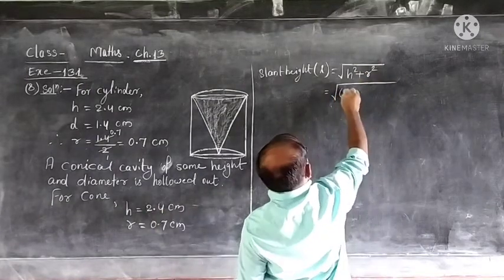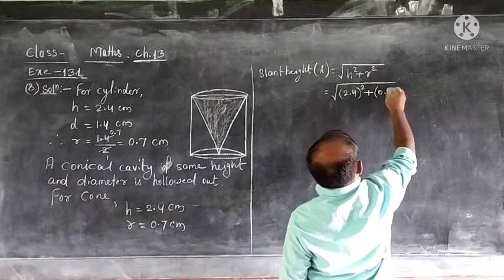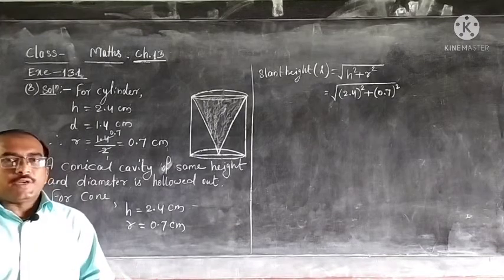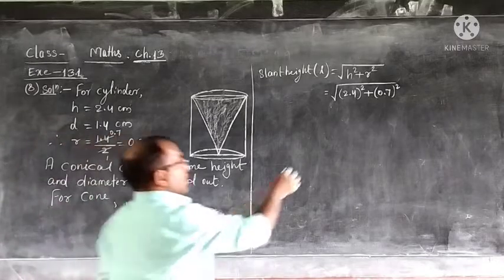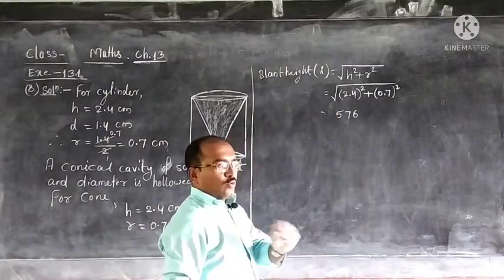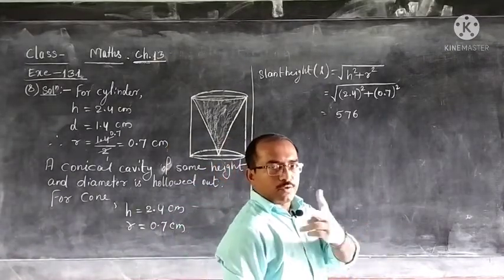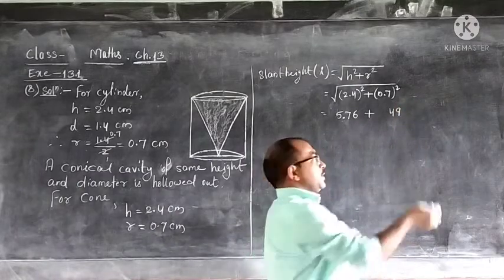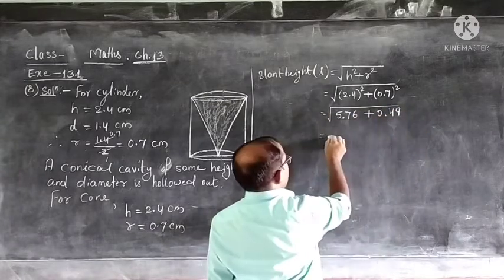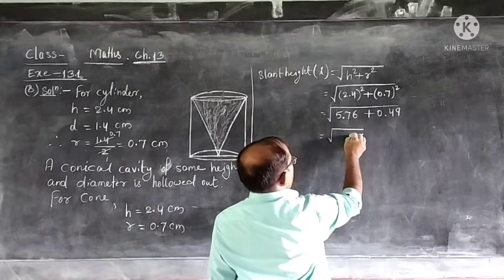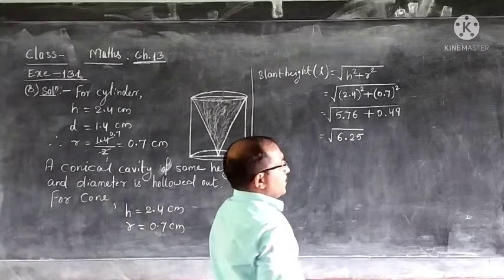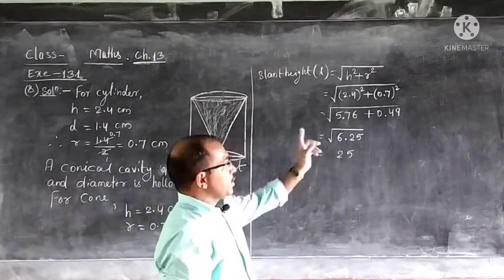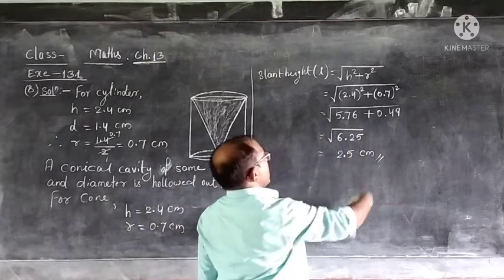Height is 2.4 and radius is 0.7. So l = √(2.4² + 0.7²) = √(5.76 + 0.49) = √6.25. Since √625 = 25, therefore √6.25 = 2.5. So the slant height l = 2.5 cm. Now we have everything we need for calculating the surface area of the remaining solid.